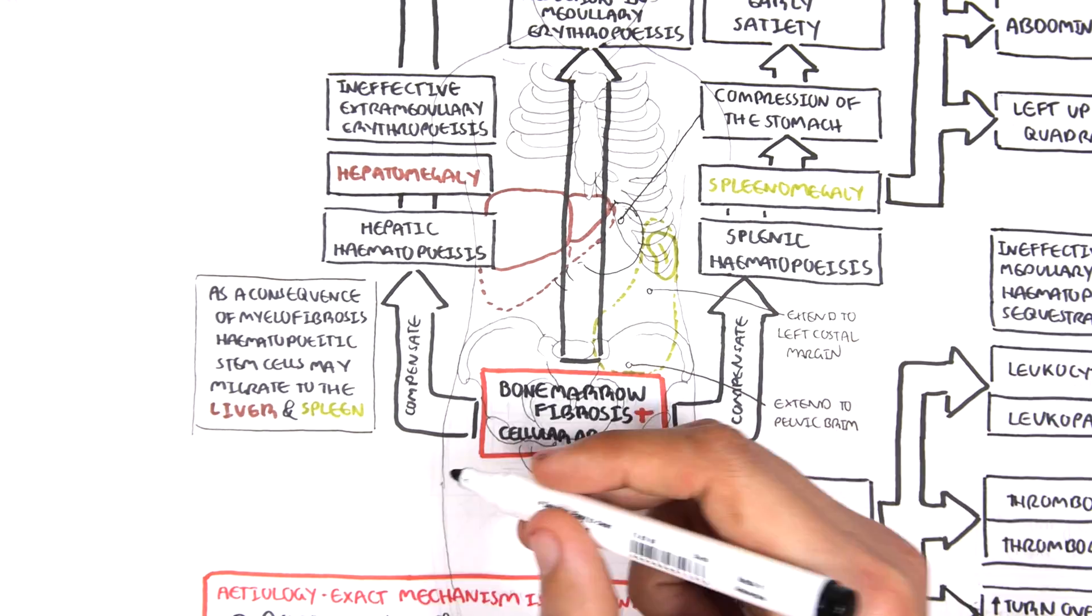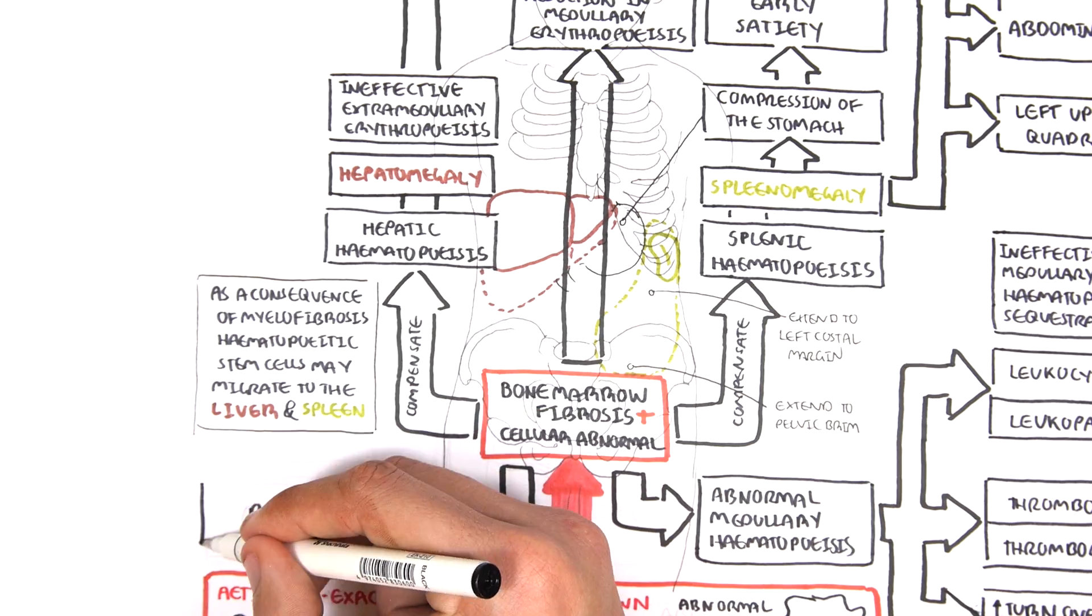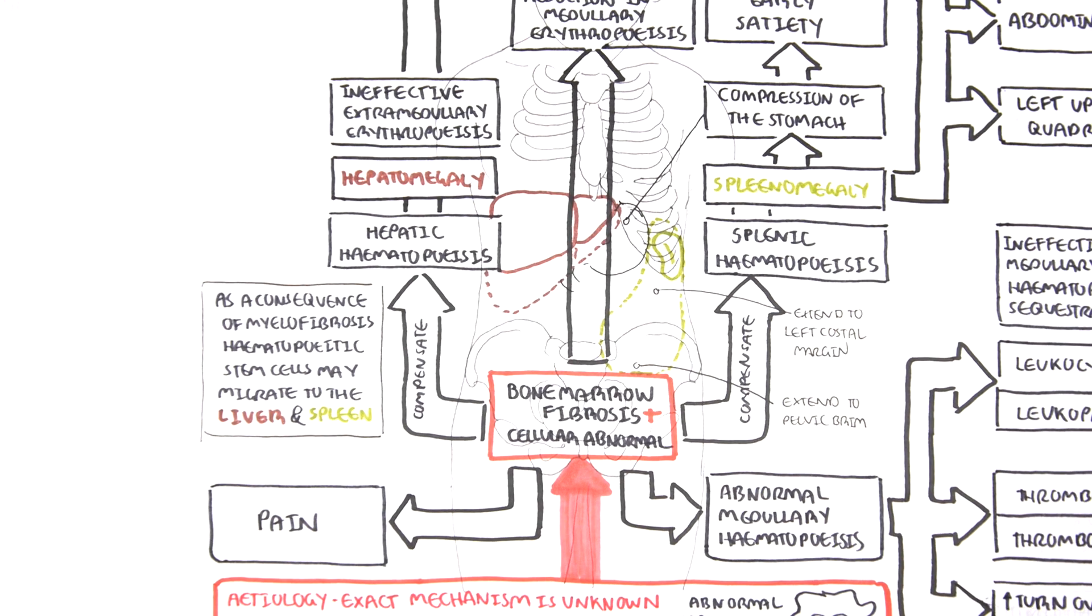Bone marrow fibrosis and cellular abnormality can cause pain once it involves the periosteum, which contains pain nerve fibers.